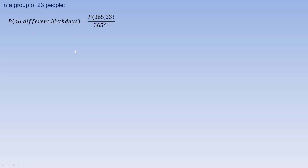Now in a group of 23 — and I'll show you why 23 is an important number — the probability they all have different birthdays would be 365 permute 23, over 365 to the 23rd. That works out to 0.493. So the probability that there are people with the same birthday — and there could be a couple people, 3, 4, 5, 6, 7, 8, 9, or theoretically all 23 with the same birthday — is 1 minus that, which is 0.507. We're just over 50% in a group of just 23 people.